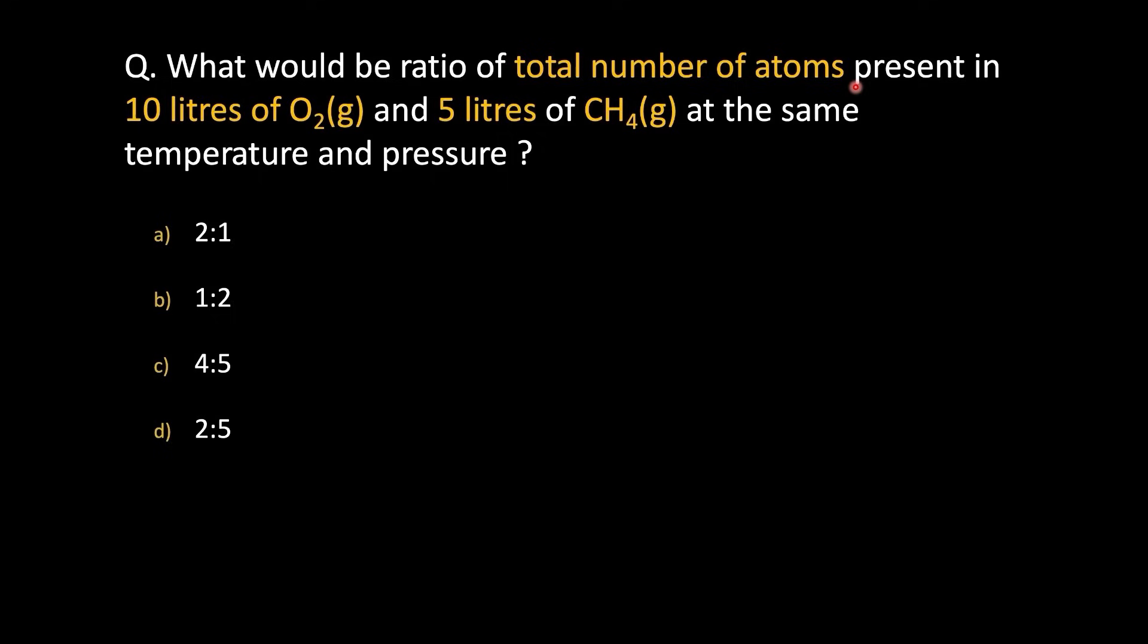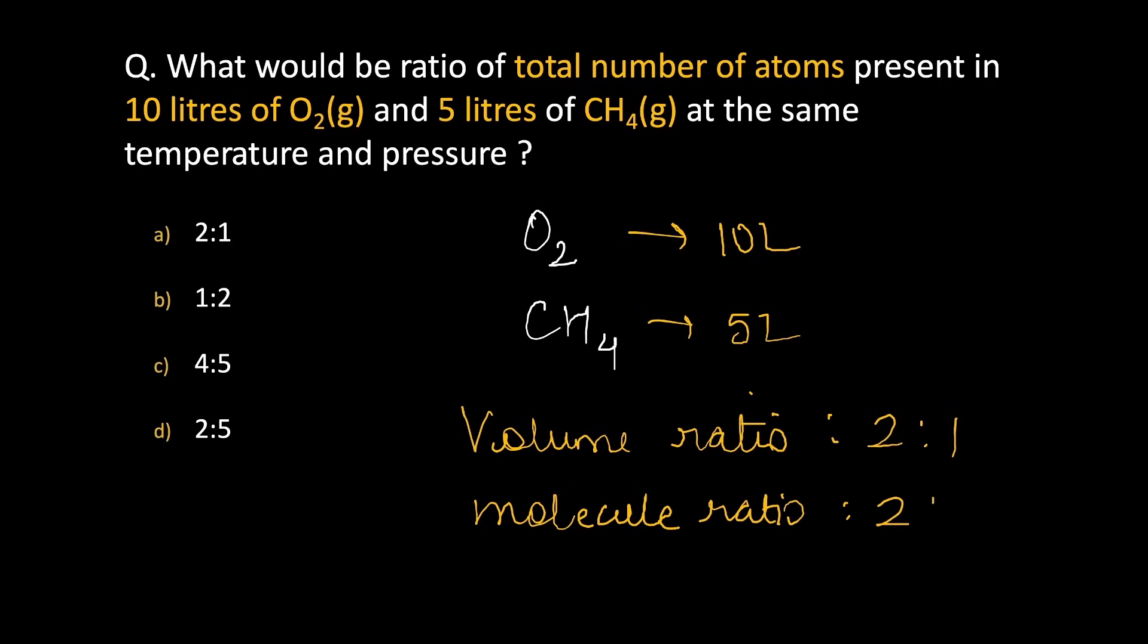I hope you could do it. We have oxygen and methane. Oxygen is 10 litres and methane is 5 litres as per the question. Let's first see the volume ratio. What's the volume ratio? It is 2 is to 1 and the same ratio has to be of the molecule. So, I can say the molecule ratio is going to be equal to the same 2 is to 1.